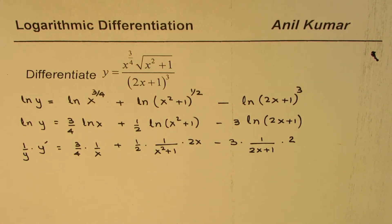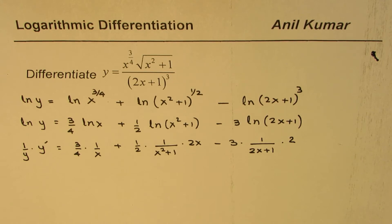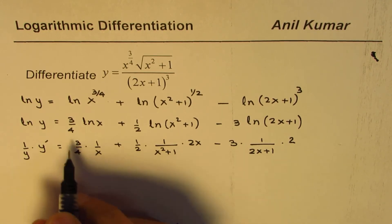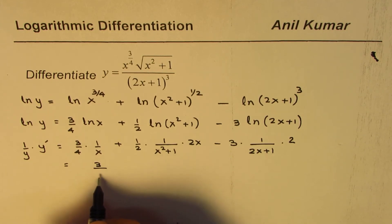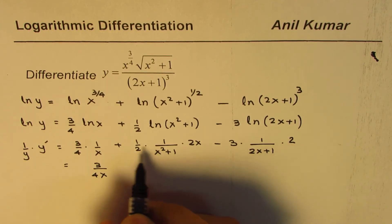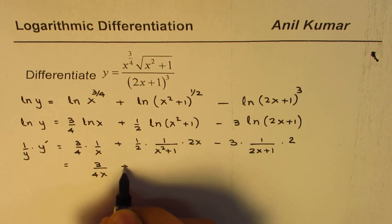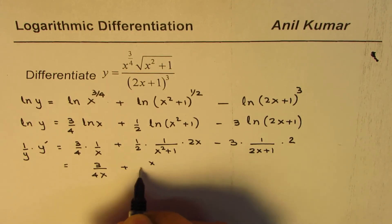So now we can simplify this. We could write this as 3/4x (this 2 and 2 cancel), so we have plus x/(x² + 1)...